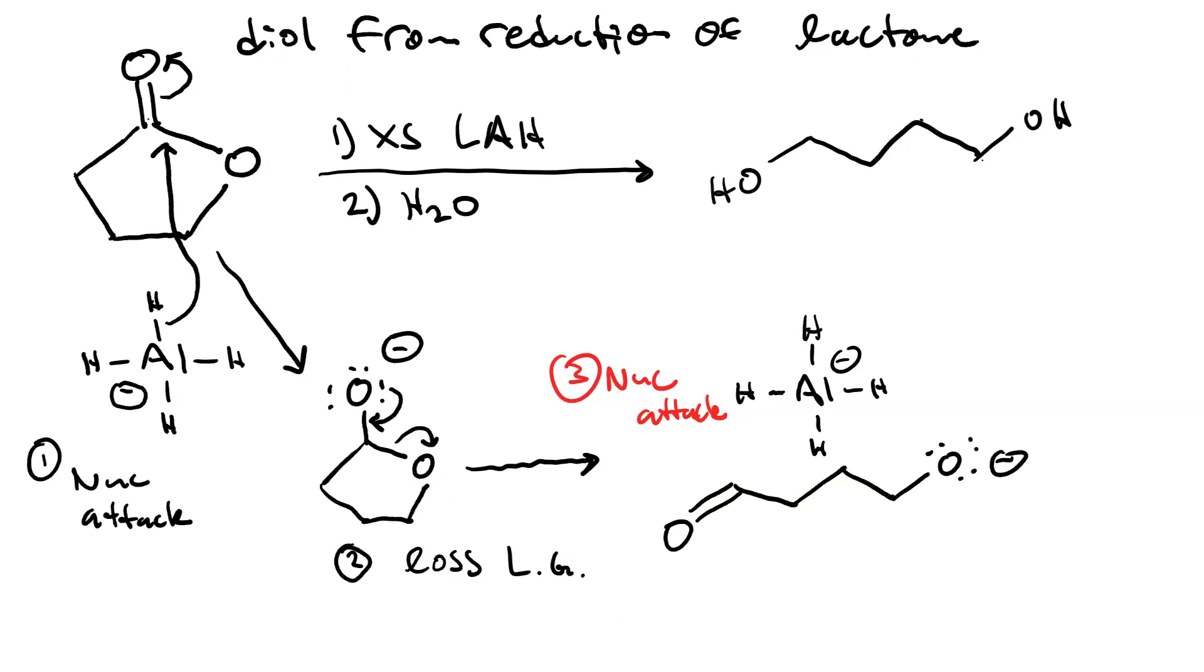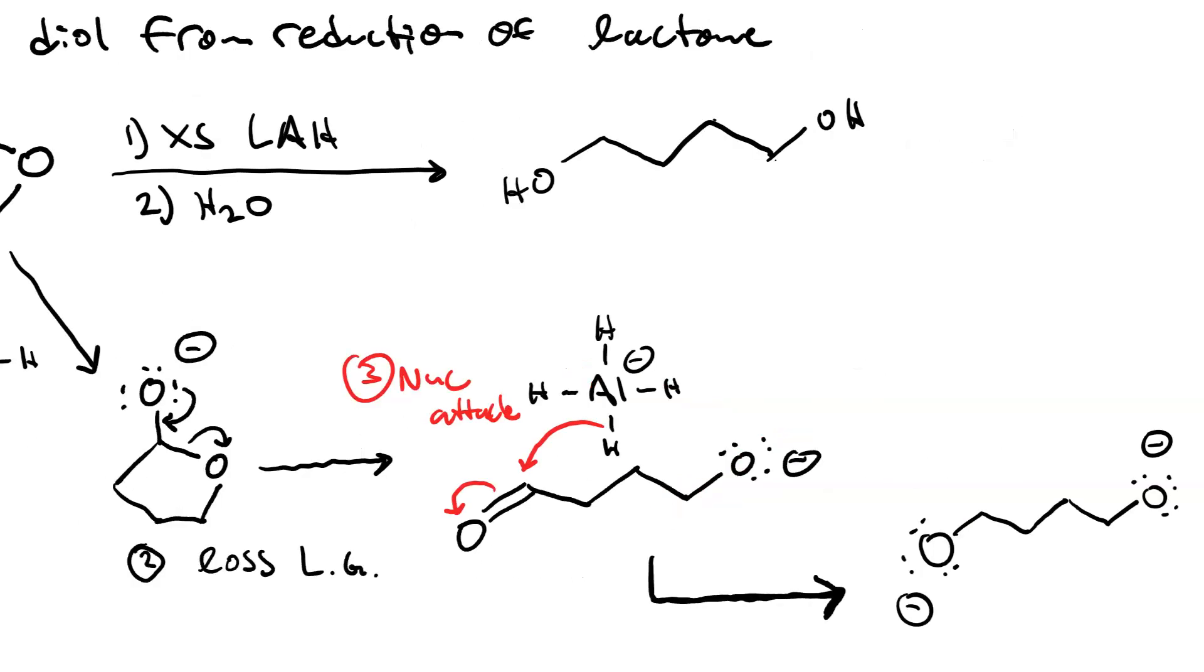In our third step, another equivalent of aluminum hydride ion performs a nucleophilic attack at the carbonyl oxygen, exceeding its octet and turning it into an alkoxide. Now we have this dialkoxide.